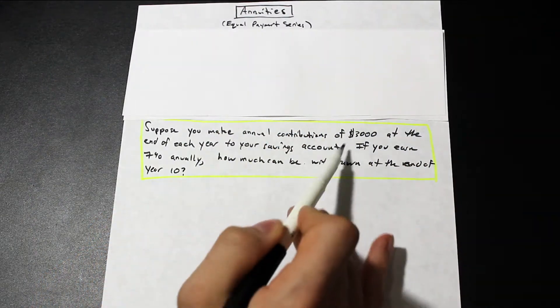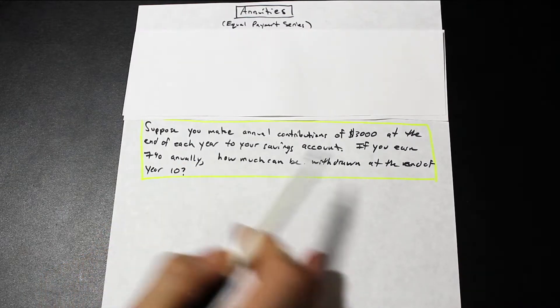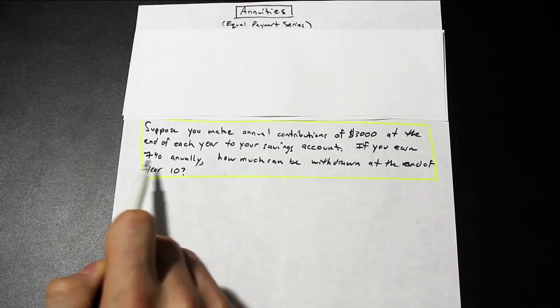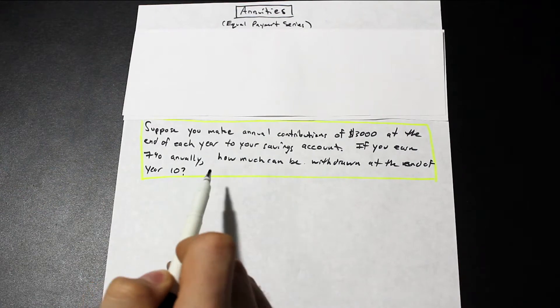Suppose you make annual contributions of $3,000 at the end of each year to your savings account. If you earn 7% annually, how much can be withdrawn at the end of year 10?